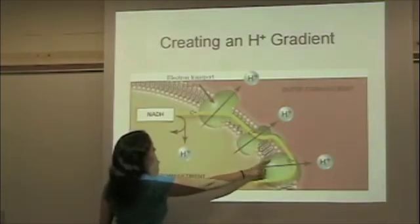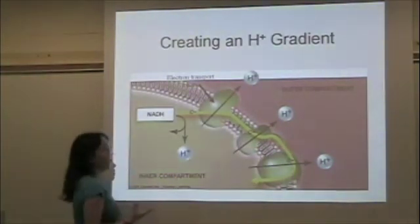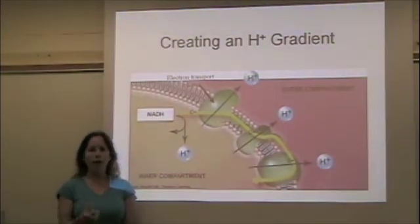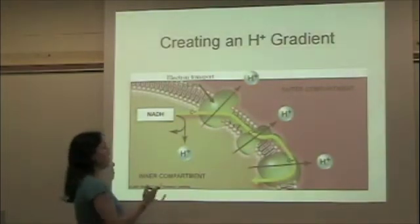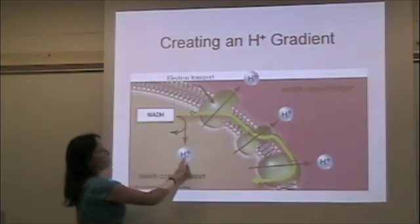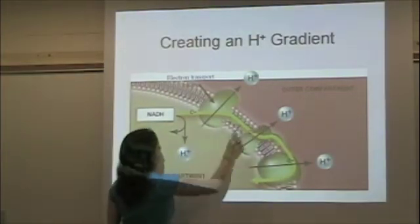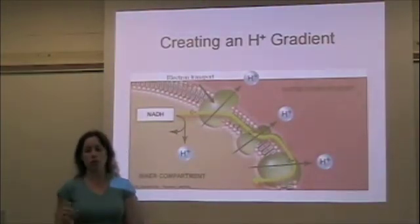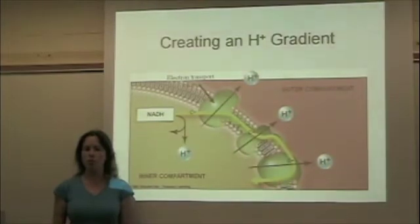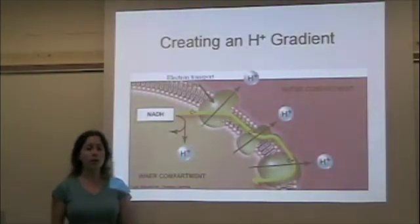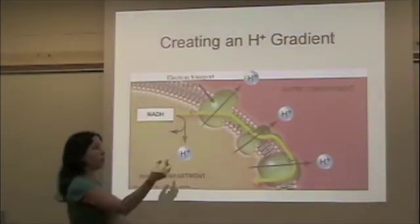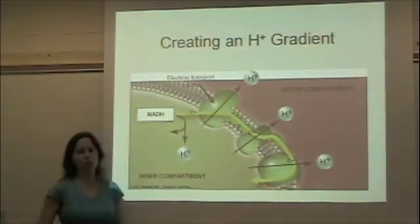The electron flows through the electron transport chain, giving off packets of energy at every step. Those packets of energy pump hydrogen ions from inside to outside, going against the concentration gradient. This is a form of active transport, and the energy to allow this active transport comes from the electron transport chain.